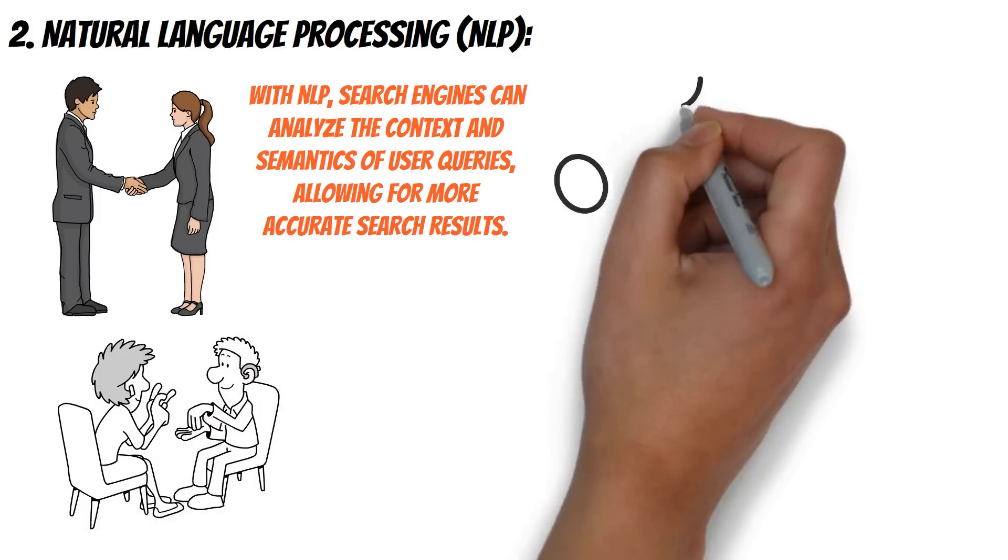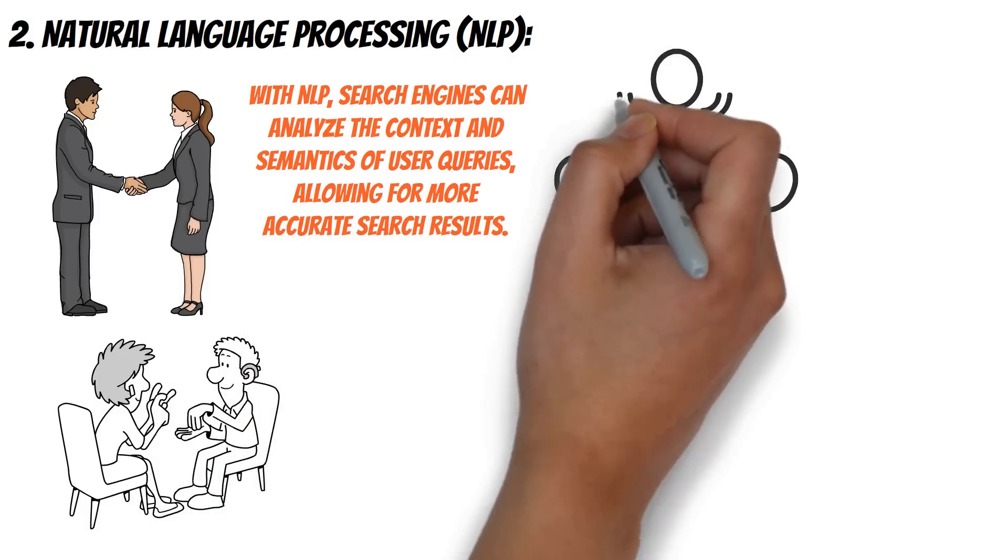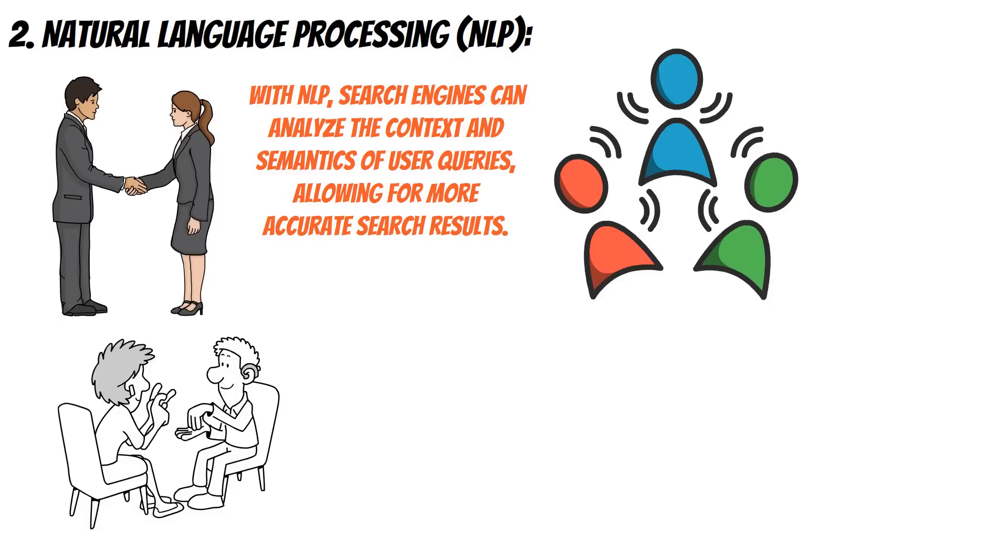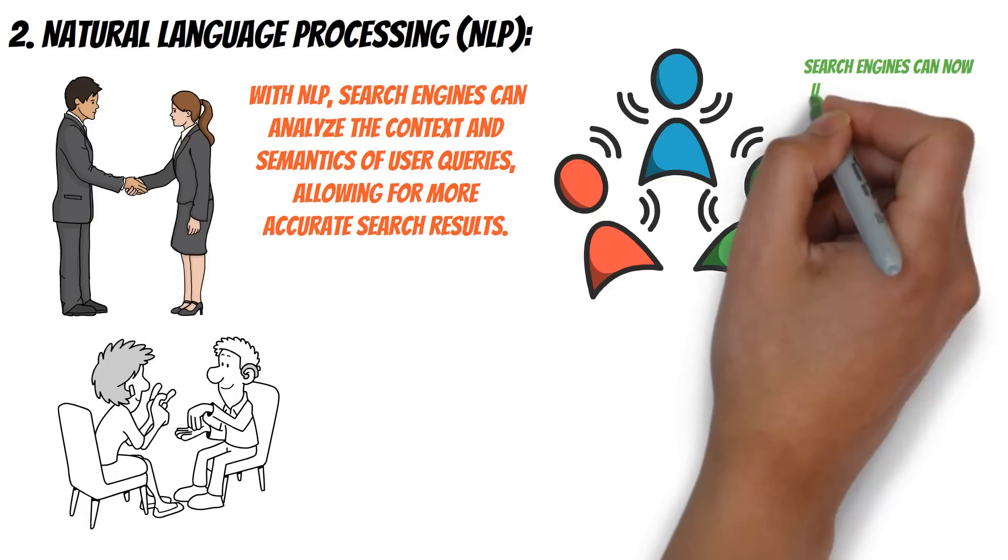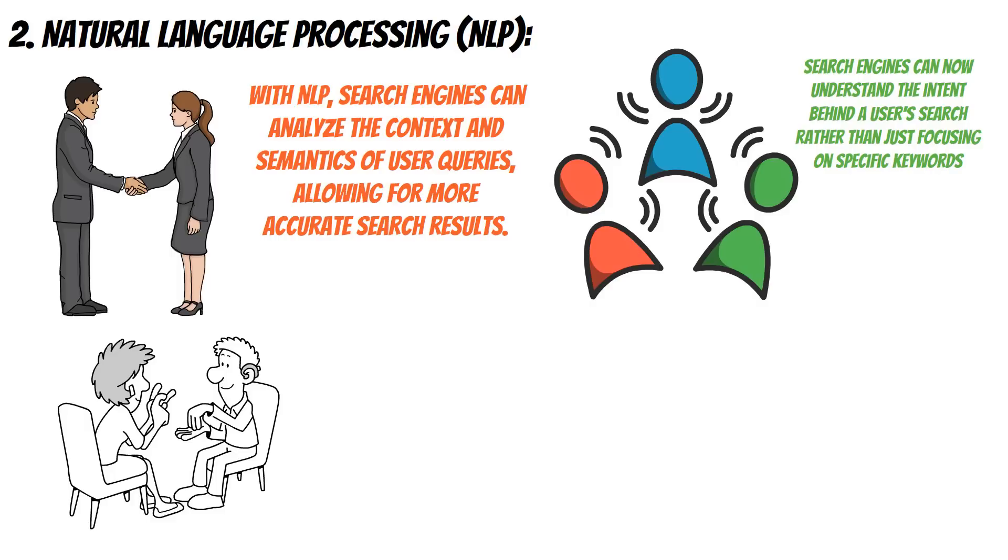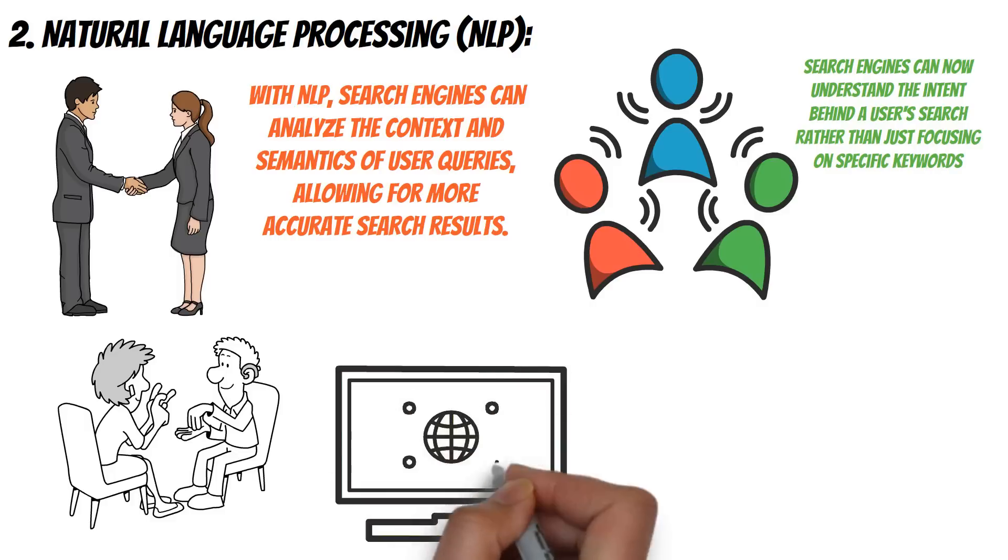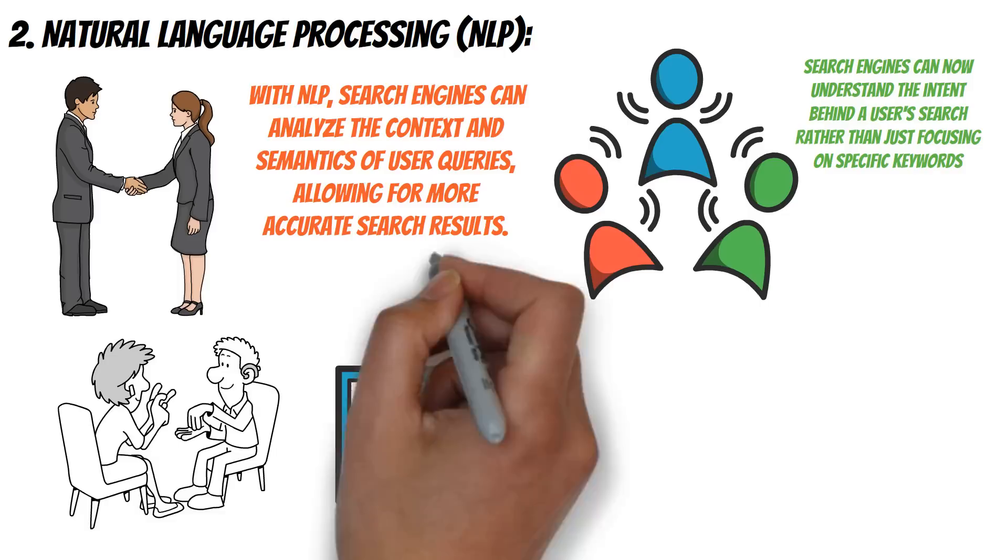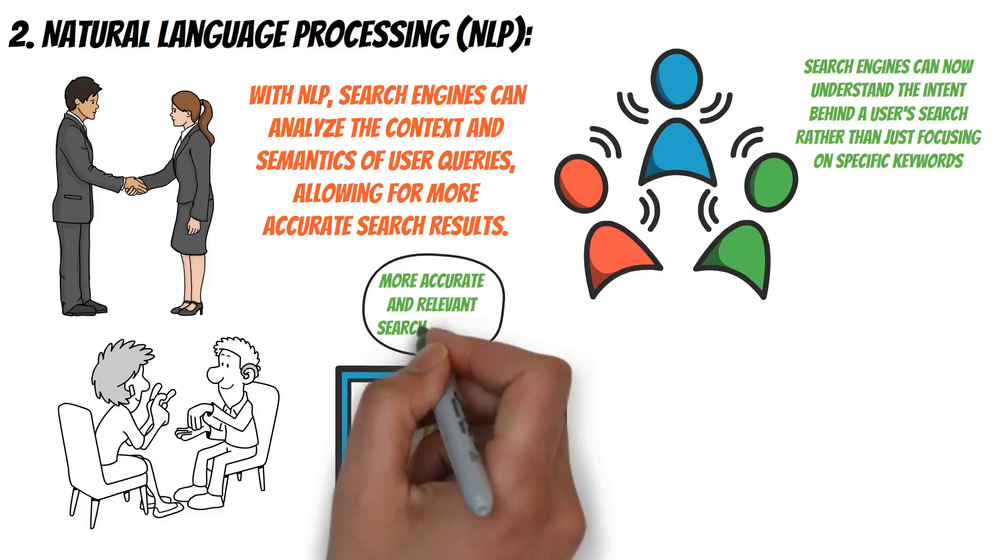Traditionally, SEO relied on specific keyword optimization to match user queries. However, with the advancements in NLP, search engines can now understand the intent behind a user's search rather than just focusing on specific keywords. This means that websites and webpages can now be optimized for user intent, leading to more accurate and relevant search results.